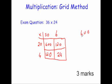So put our 600, our 120, our 120, and our 24. And then we just add them up. So 0 plus 0 plus 0 plus 4 is 4. 2 plus 2 plus 2 is 6. And 6 plus 1 plus 1 is 8. So the answer would be 864.